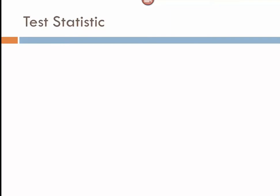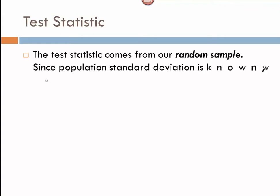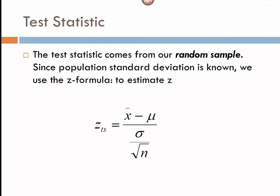One of the most important numbers that we get in running a hypothesis test is our test statistic, and when we're testing for means, the z-value that we use — and we can use z because we know the population's standard deviation — is calculated by comparing our sample value to our assumed population value from our null and alternative hypothesis, divided by sigma, the standard deviation of the population, over the square root of n.